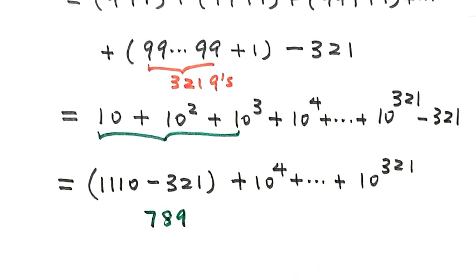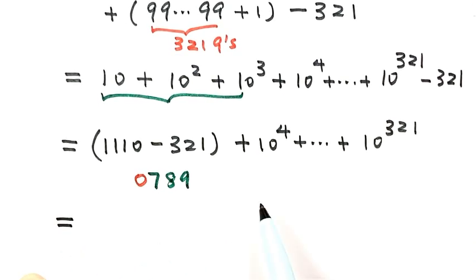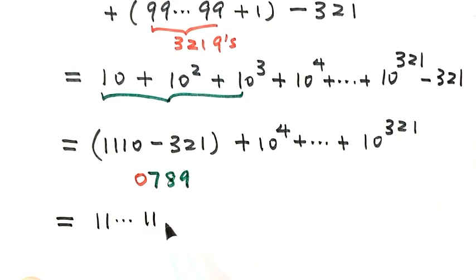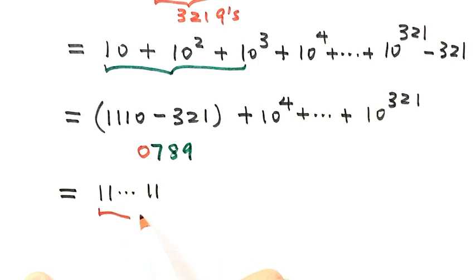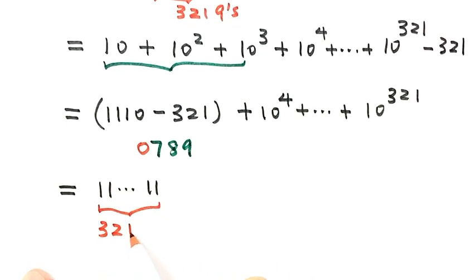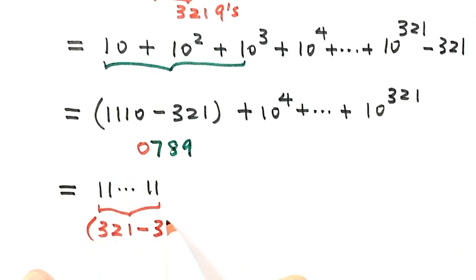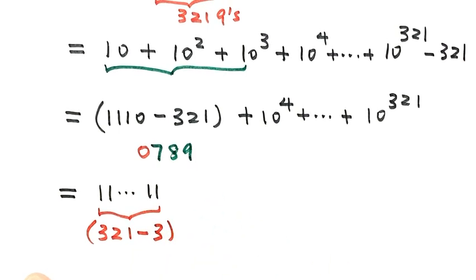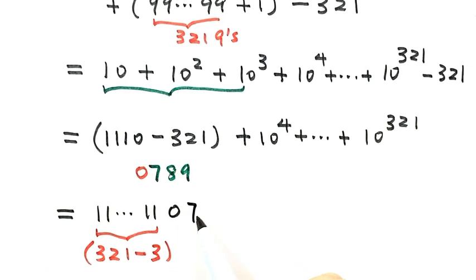The last four digits of the resulting number are 0789. So then what is the value of n? Based on the series from 10 to the 4th up to 10 to the 321st, we have 318 ones, then minus 3 ones here. The last four digits are 0, 7, 8, 9. So this is the value of n.